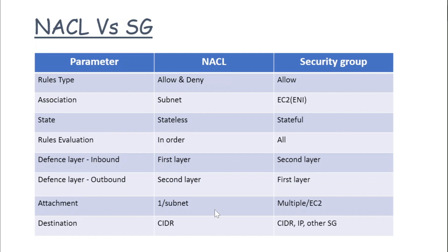A NACL can be attached one per subnet, so one subnet can have only one NACL attached to it. But for security groups, there can be multiple security groups attached to a resource. In NACLs, for the destination you can only have CIDR — meaning you have to define IP ranges — but in security groups you can have CIDR, specific IPs, and you can also reference other security groups as a destination.